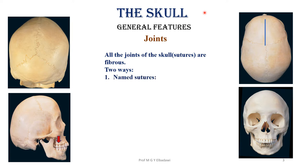The first type includes sutures which have their own names and do not take the name of the two articulating bones — exactly like joints of the body such as the knee, ankle, and elbow. For example, the coronal suture, which is between the frontal and the two parietal bones.